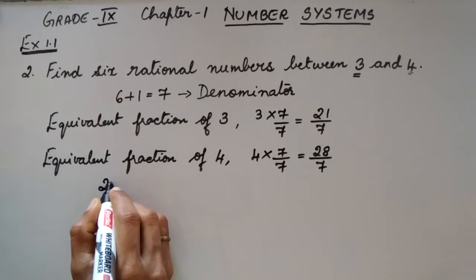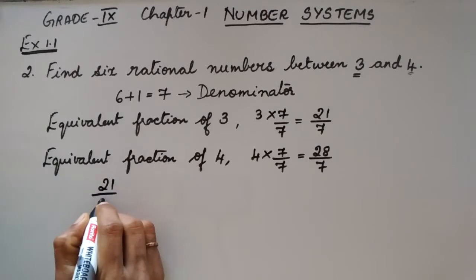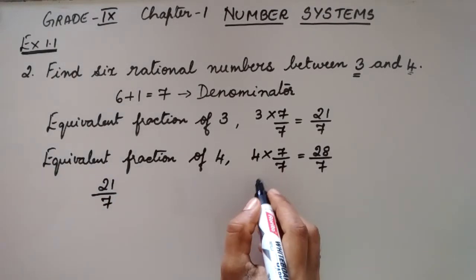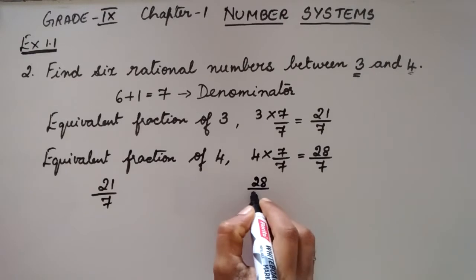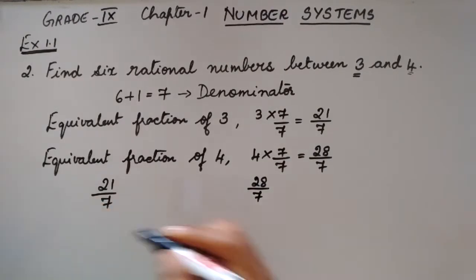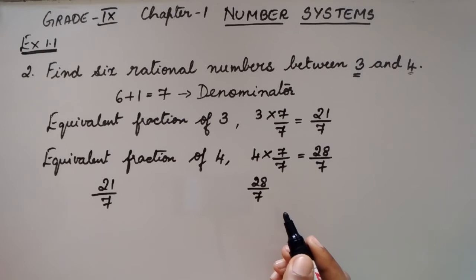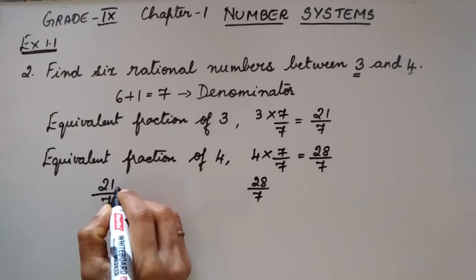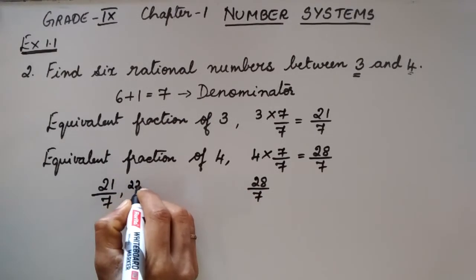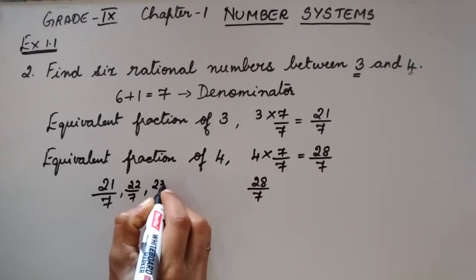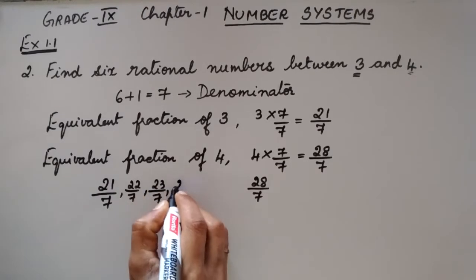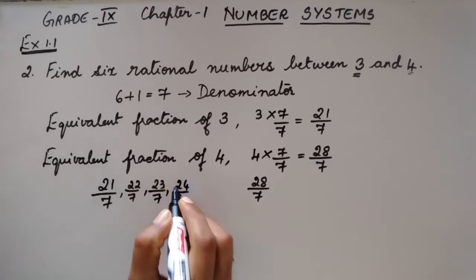Now, we got 2 equivalent fractions that is 21 by 7 and 28 by 7. The rational numbers between these are 22 by 7, 23 by 7, 24 by 7.